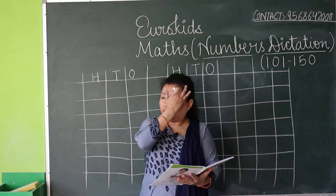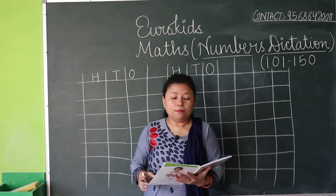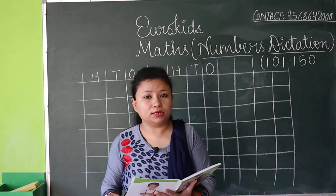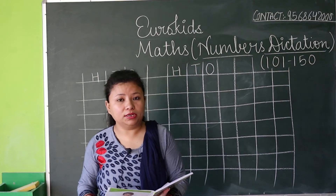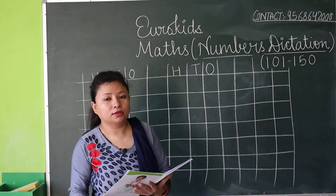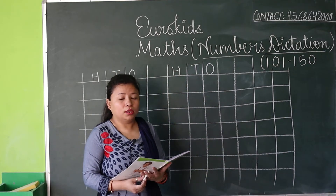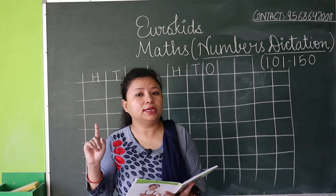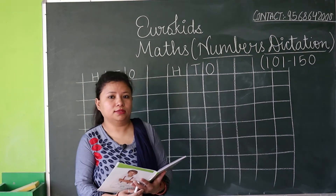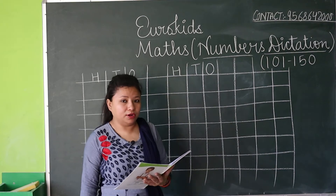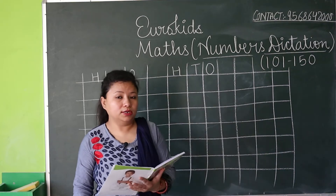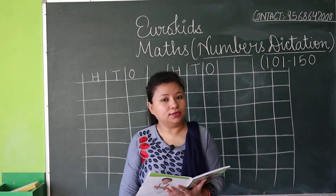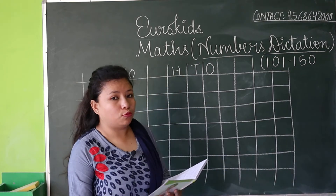Now ma'am is starting. Okay, my first number is 109. Ma'am is repeating again — 109. Yes, you have to write 109. As ma'am taught you before, this is 100, okay — 109.